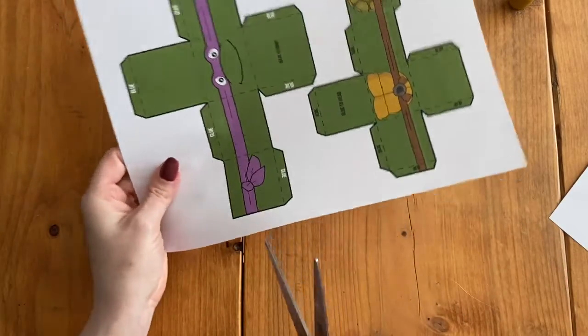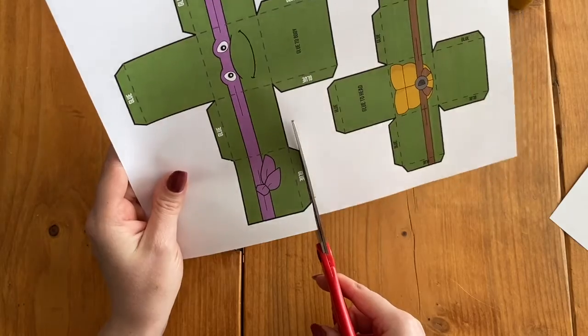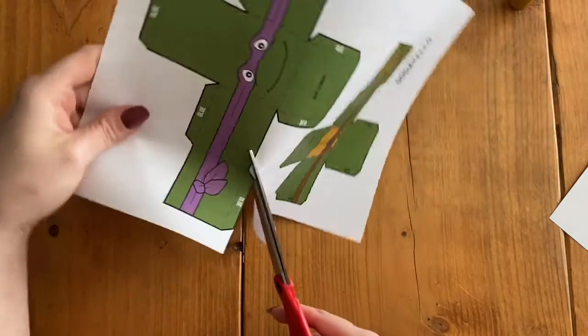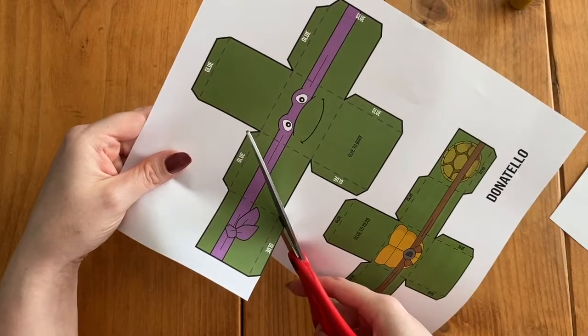So I'm going to start cutting with my scissors and I like to cut and then I twist the paper, it's a little easier. So all these little tabs and angles have to get cut out.